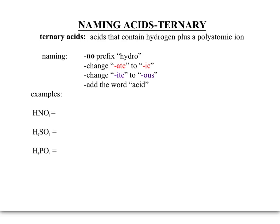We do not use the prefix 'hydro' for ternary acids — that's very important. 'Hydro' is for binary acids only. The two most common endings for polyatomic ions are '-ate' and '-ite,' and those endings will be changed: the '-ate' ending is changed to '-ic,' and the '-ite' ending is changed to '-ous.' Then we add the word 'acid' at the end.